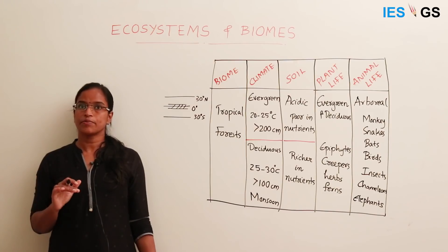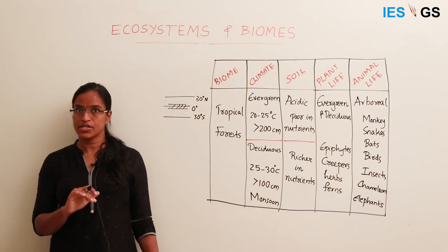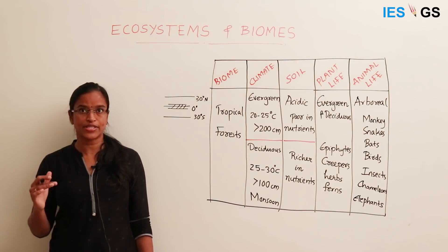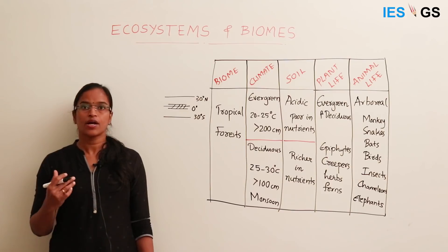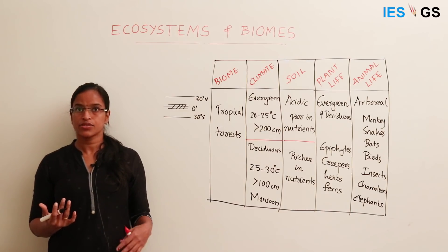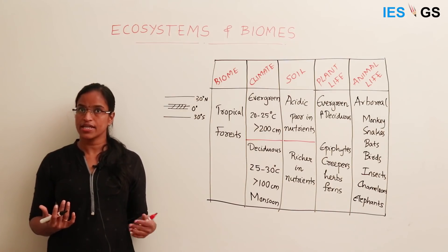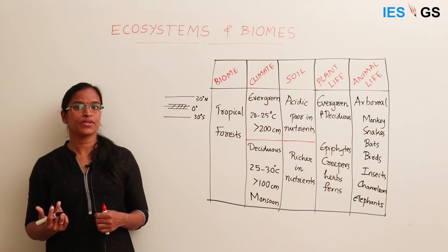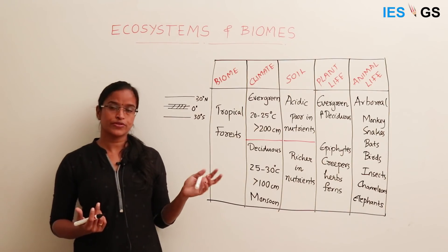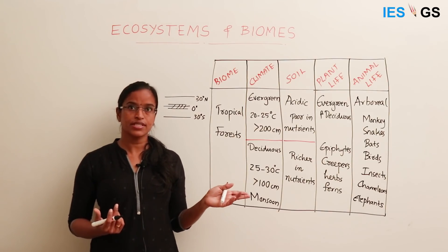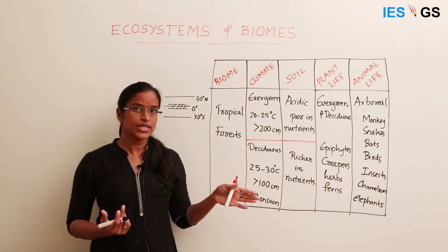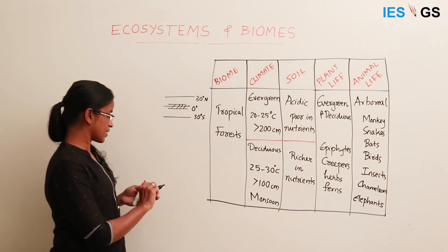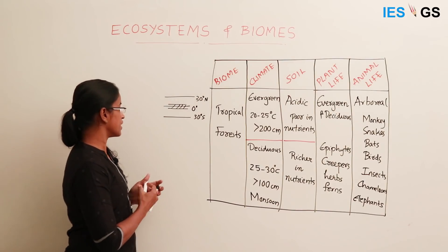The main characteristics of a tropical ecosystem are that both temperature and precipitation are in the higher range, so humidity is higher and temperature is also higher. Given these conditions, what could be the type of soil in this region? The soil in this region is characterized by the process called leaching.